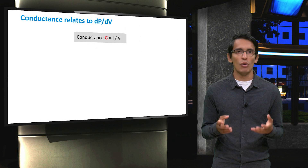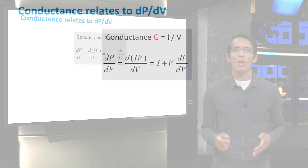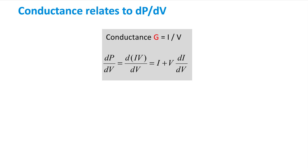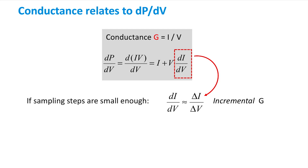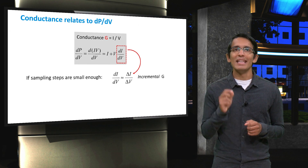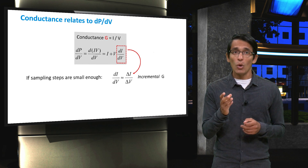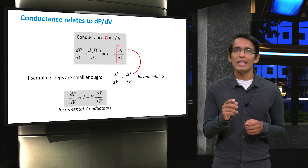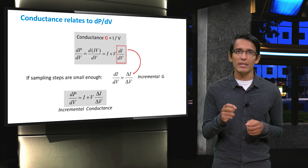Conductance can easily be determined by a simple current and voltage measurement. Since P is equal to current times voltage, or I times V, we can change dP/dV to d(I·V)/dV. Through the product rule, this equals I·(dV/dV) plus V·(dI/dV). Since dV/dV simplifies to 1, we are left with dP/dV = I + V·(dI/dV). We can take that dI/dV term and equate it to ΔI/ΔV if the steps are small enough. This term, ΔI/ΔV, is known as the incremental conductance. So we can rewrite the equation as dP/dV = I + V·(ΔI/ΔV).